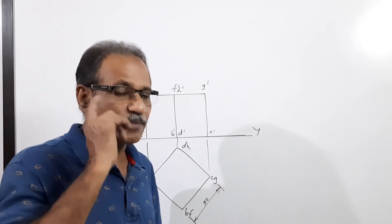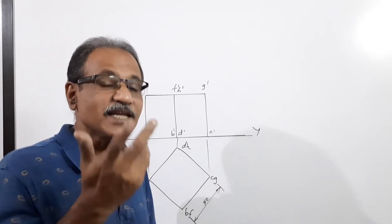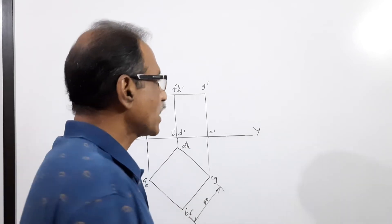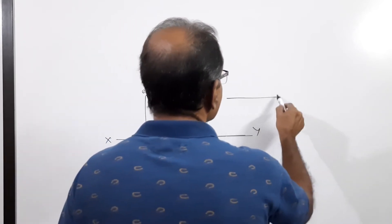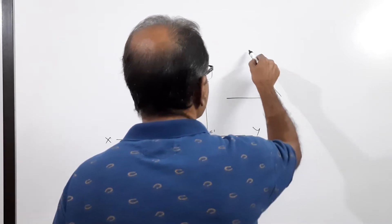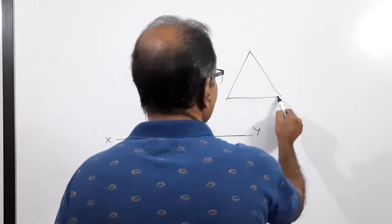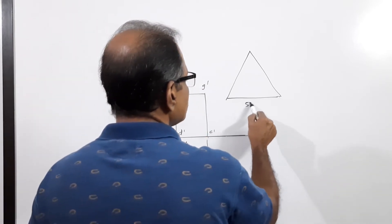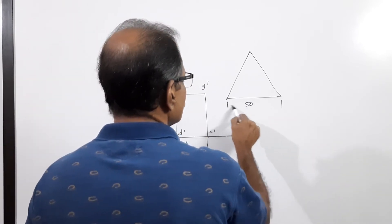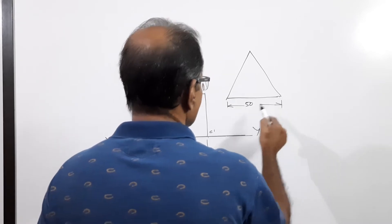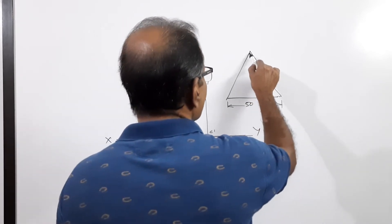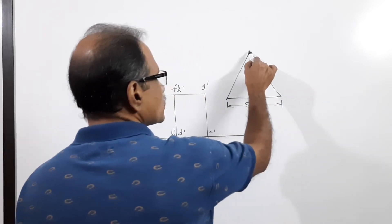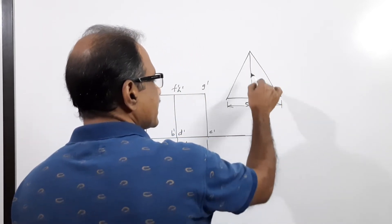This is cut by a cutting plane so that the true shape is an equilateral triangle of side 50 mm. So I draw an equilateral triangle of side 50 mm elsewhere — I draw it somewhere with side 50. Then I find the altitude: connect the apex to the centre of the opposite side to get the altitude edge.